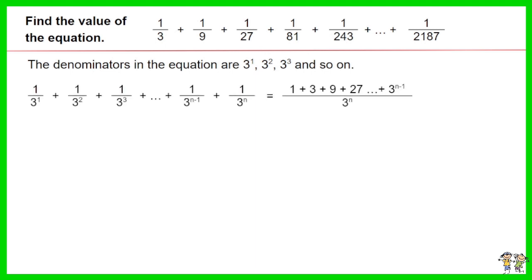For such an equation, with the denominators of the fractions as the 3 to the power series, the result can be represented by the sum of the 3 to the power series up to power of n minus 1 as numerator and 3 to the power of n as the denominator.